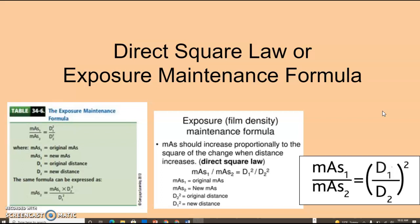It used to be called density maintenance formula, but as you know, we have moved on from density and we're using exposure. So it's similar to inverse square law, but this one we're finding mAs. And it's also a direct setup, so mAs1 is directly across from distance 1, mAs2 is directly across from distance 2.